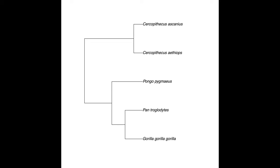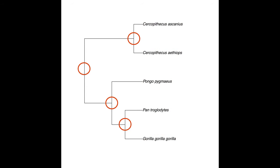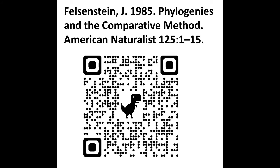The solution is to use measurements not from each species at the tips of the phylogeny, but rather from each node. The nodes are ancestors of the species at the tips. The tips represent existing species, whereas the nodes represent ancestors that once existed. Mathematically, evolutionary biologist Dr. Joe Felsenstein showed that the measurements of the nodes are independent of one another, even though the data points at the tips are not.